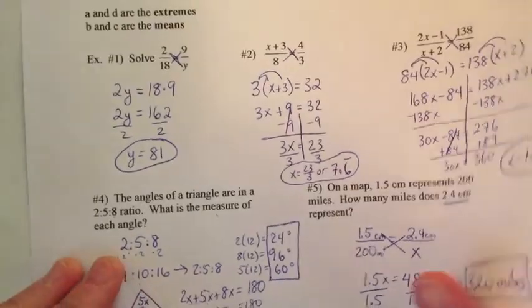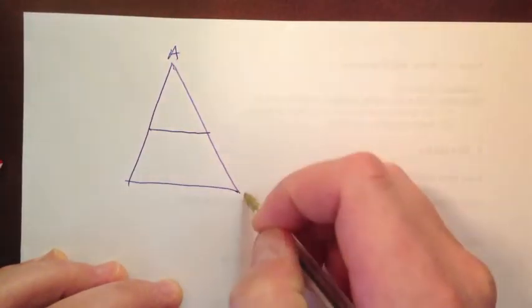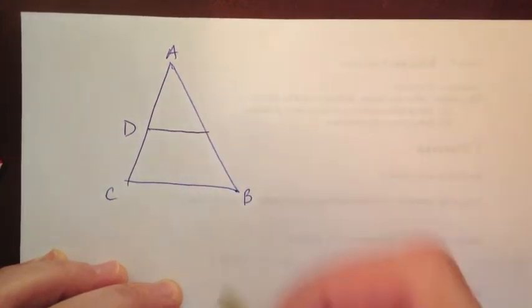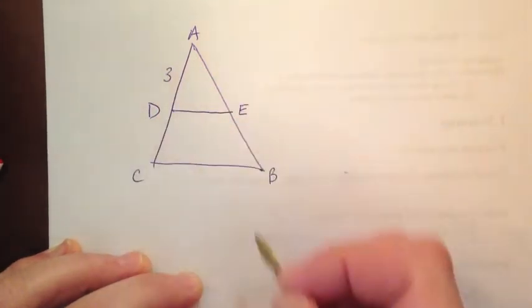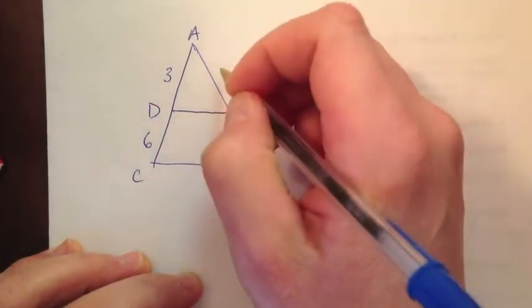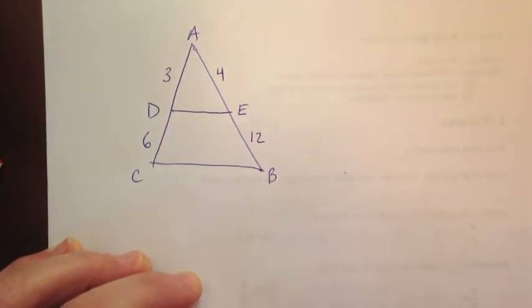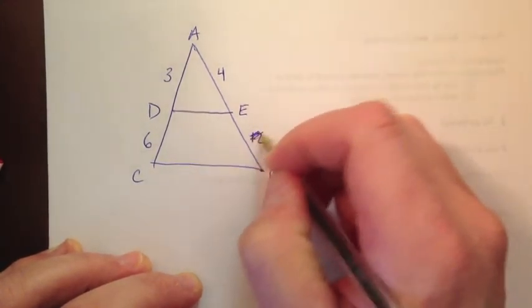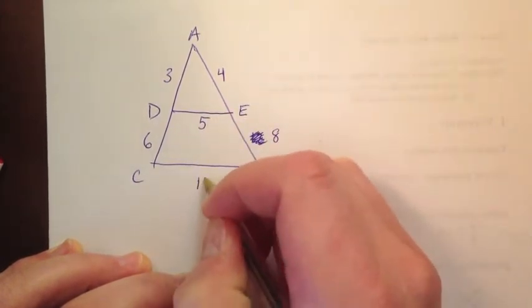Flip it on the back, which currently is blank. But we're going to put one more example on here. Do a real quick example. Let's say we have something like this. And we'll call this A, B, C, D, and E. And let's go ahead. We'll say that AD is 3. That CD is 6. AE is 4. EB is 8. We'll make that 8. And then we'll say that DE is 5. And CB is 15.